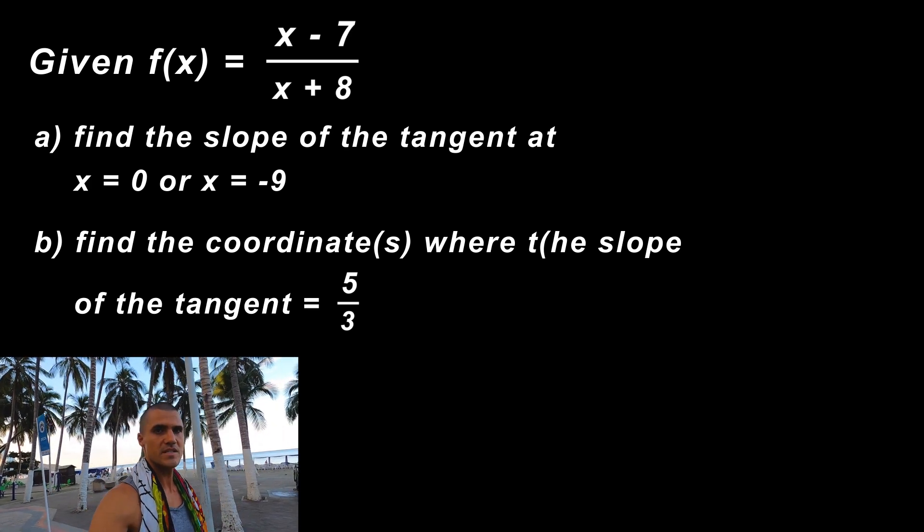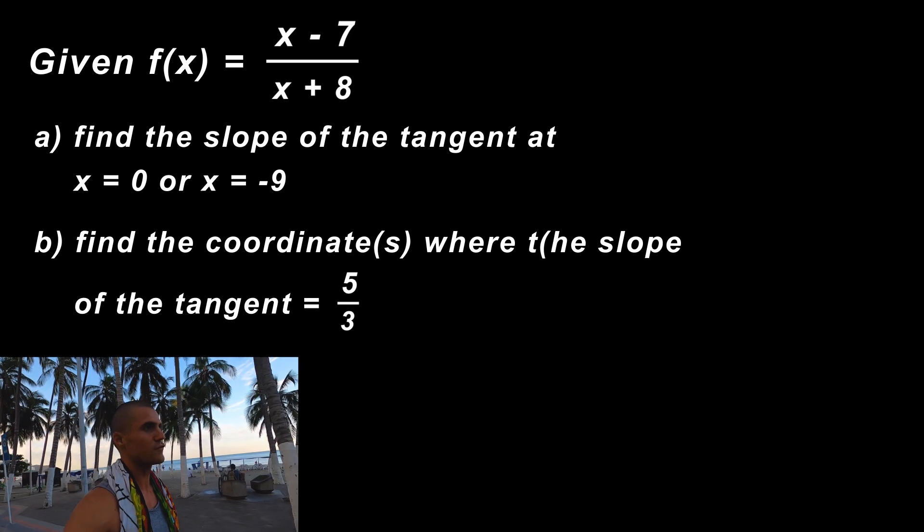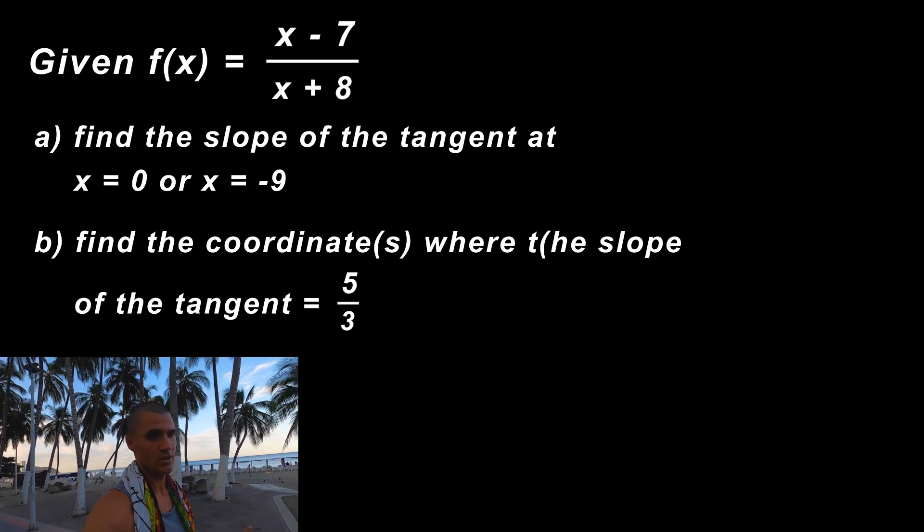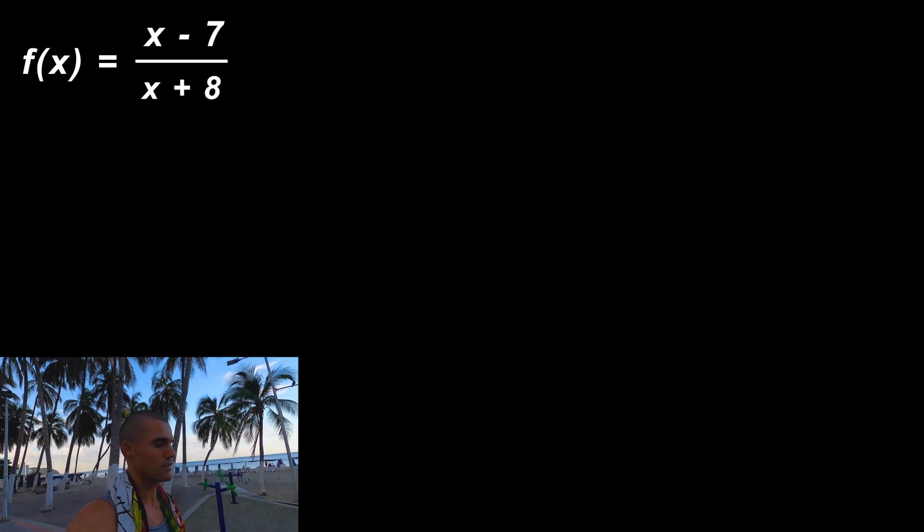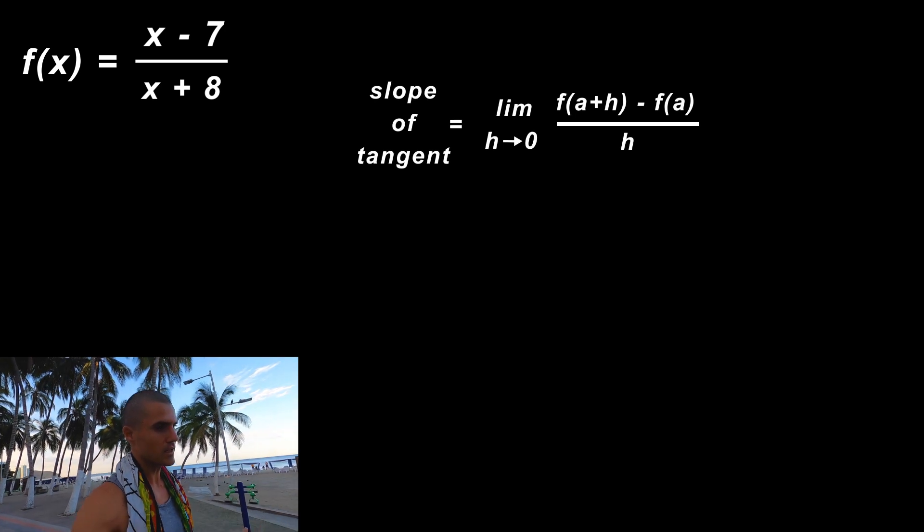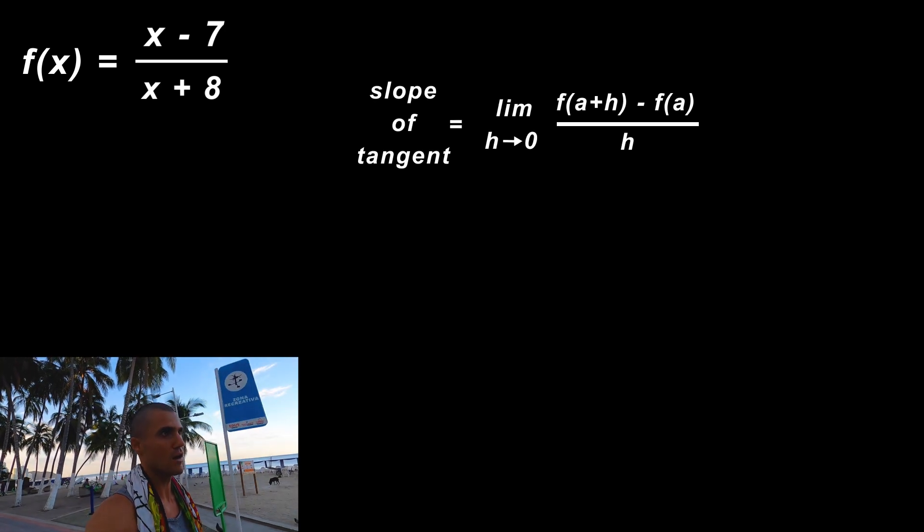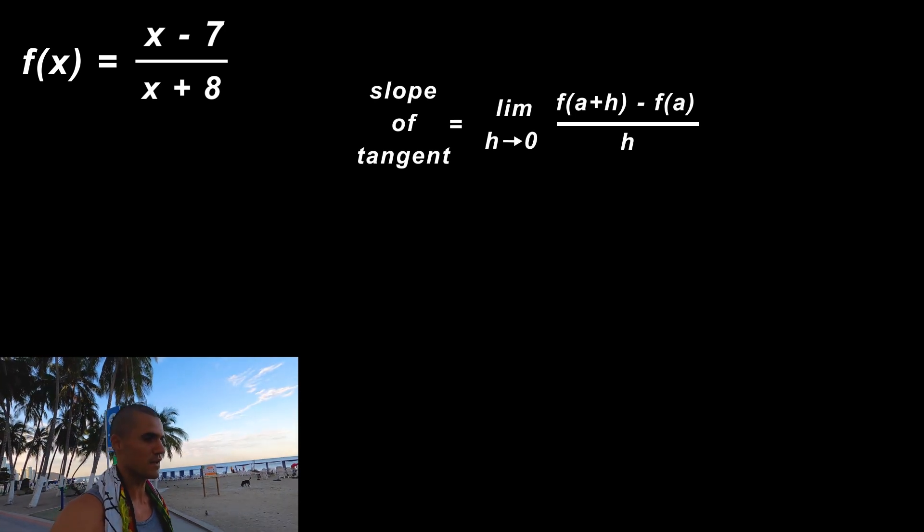Remember from this section, what is the formula for the slope of the tangent that we've come up with? It is the limit as h approaches 0 of [f(a+h) - f(a)]/h.